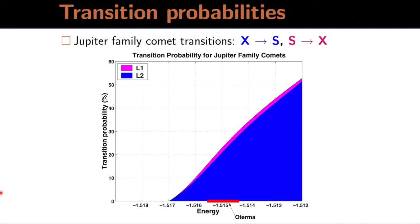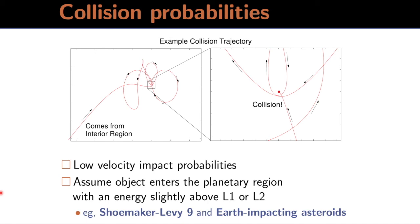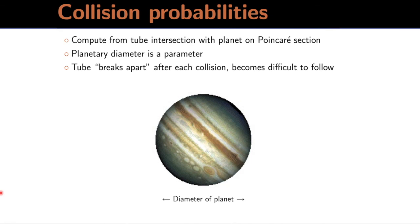We can also consider collisions, since these tubes will intersect the planet. These would be the lowest velocity impacts that are possible. So we assume that an object enters the planetary region with an energy slightly above L1 or L2, for example, Shoemaker-Levy 9 in its 1994 collision. So we just basically look at how the tube intersects the planet, and that becomes a probability.